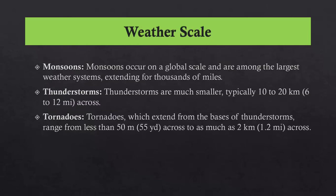What is a weather scale? Monsoons occur on a global scale and are among the largest weather systems, extending for thousands of miles. In Pakistan, the monsoons are expected from July to August. Thunderstorms are much smaller, typically 10 to 20 km across. Tornadoes, which extend from the base of thunderstorms, range from less than 50 meters across to as much as 2 km across.